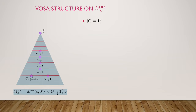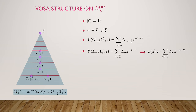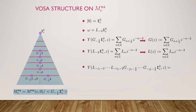The vertex operator superalgebra structure: the vacuum is the highest weight vector, the conformal element is the degree-2 element, and the map Y is defined by putting all the Virasoro algebra generators in a power series in the standard way. We also define Y on another degree-3/2 vector by putting all the odd generators in a power series. Then we can define Y on any element by taking the normal ordered product of these two fields and their corresponding derivatives.